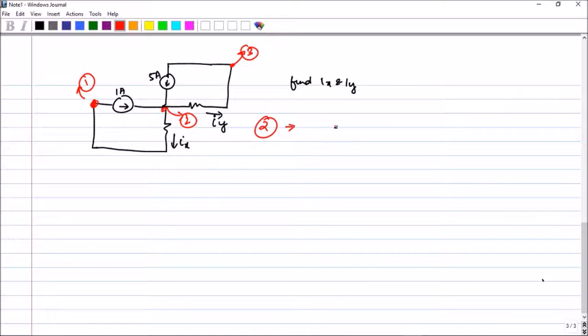If you apply KCL in node 2, what will you get. 1 is entering. So minus 1. 5 is entering. Minus 5. And Ix is leaving. And Iy is leaving. So both have positive signs. Equal to 0. Now, you can clearly see that you are having one equation and two unknowns. So it is not possible to solve. Look at the other nodes.